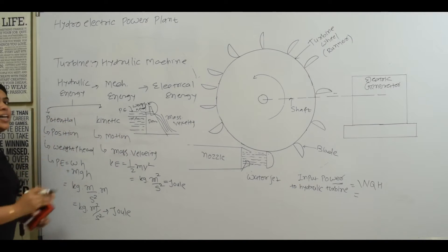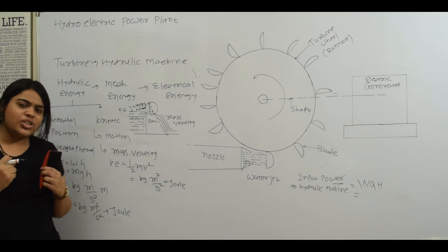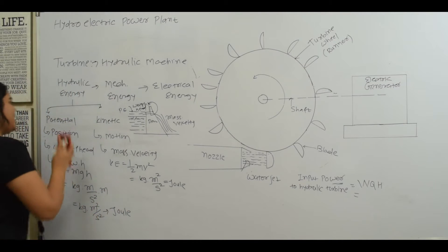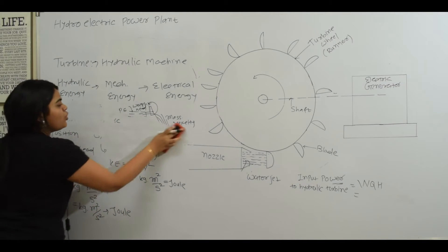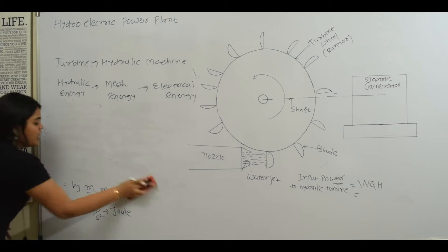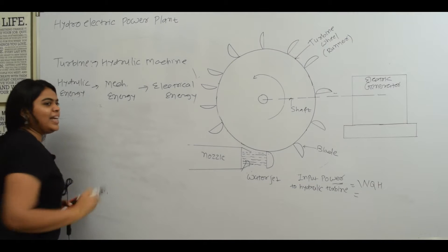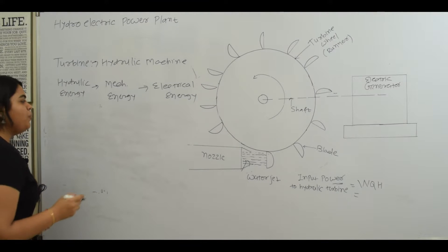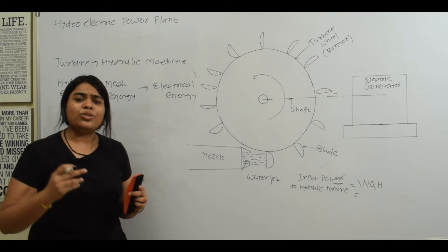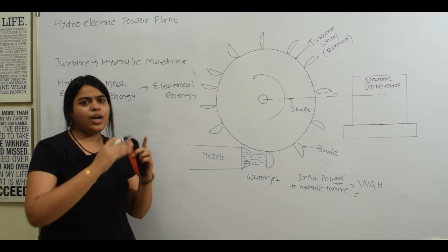So what happens in water when it is at rest? It has potential energy. When it moves into motion, it becomes kinetic energy. We are going to use these two energies to convert this hydraulic energy into mechanical energy. Generally, the hydroelectric power plant can be built by constructing dams across the river.